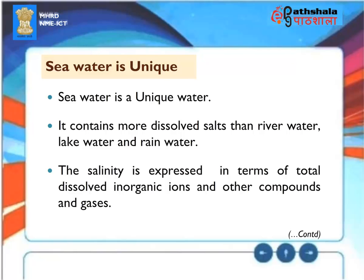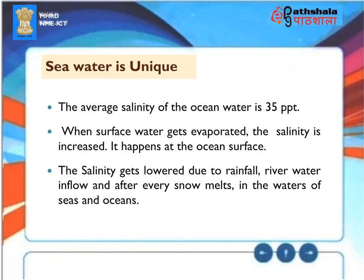Seawater is a unique water — it contains more dissolved salts than river water, lake water, and rain water. The salinity is expressed in terms of total dissolved inorganic ions and other compounds and gases. The average salinity of ocean water is 35 parts per thousand. When surface water gets evaporated, the salinity is increased. The salinity gets lower due to rainfall, river water inflow, and after every snow melts in the waters of seas and oceans.